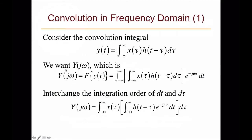On the left-hand side we have Y(jω), which is the Fourier transform of the output. Applying the analysis equation, we integrate from minus infinity to infinity of the convolution sum times e^{-jωt} dt. As a property of integration, we can switch the order of the inside and outside integral variables by swapping dτ and dt, and we need to move that term alongside dt.